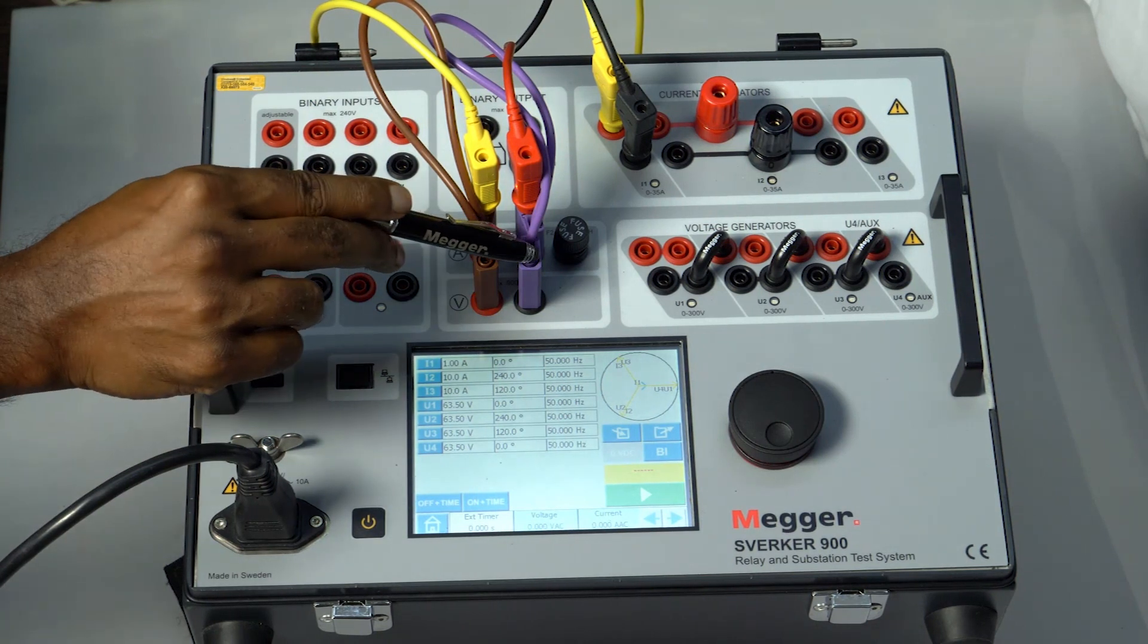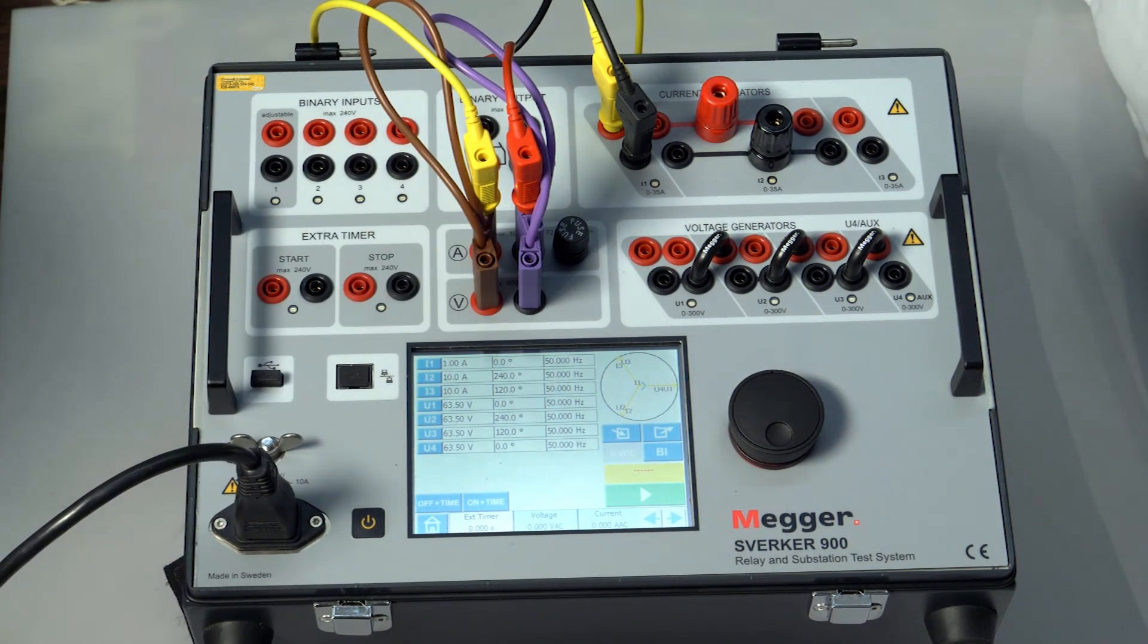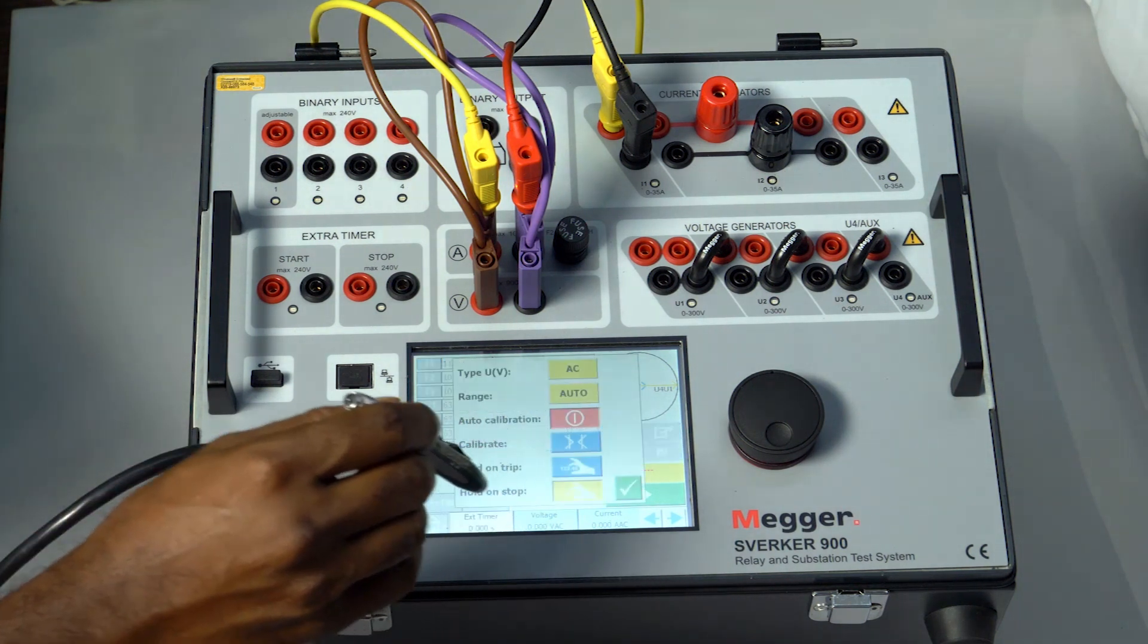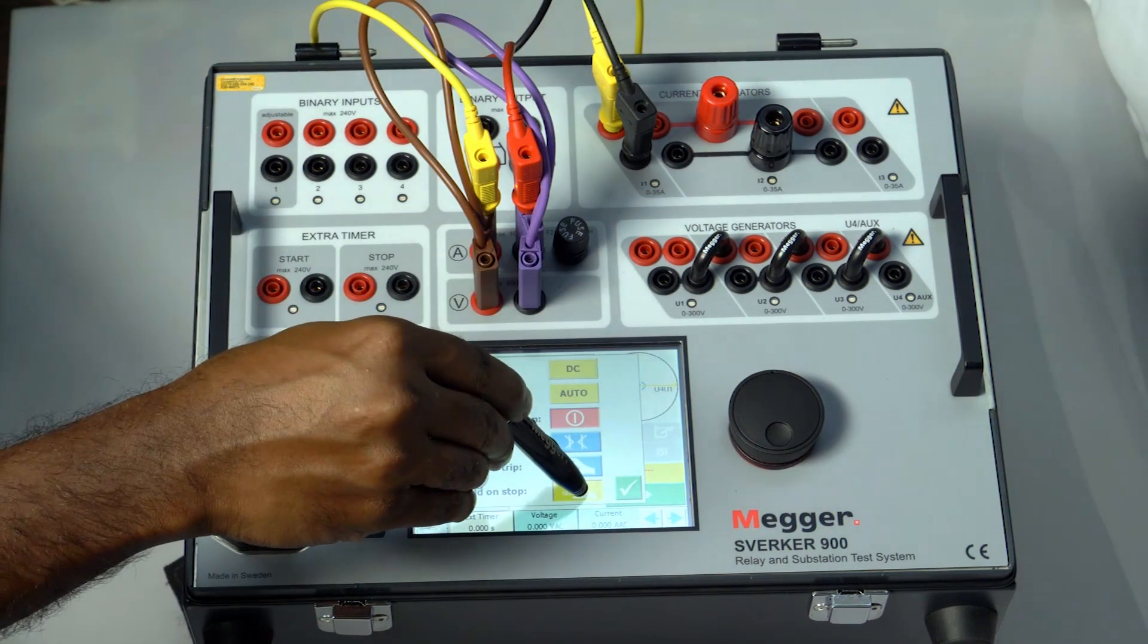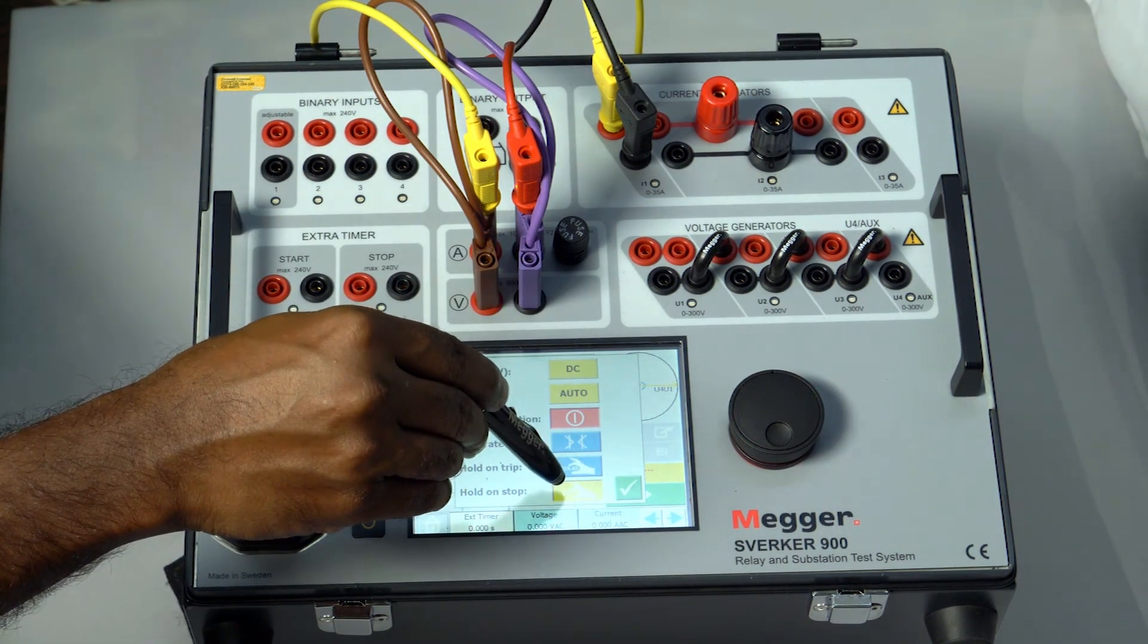The voltmeter is connected in parallel to the CT for measurements of voltage. Select the ammeter and voltmeter to measure DC and hold on stop option.